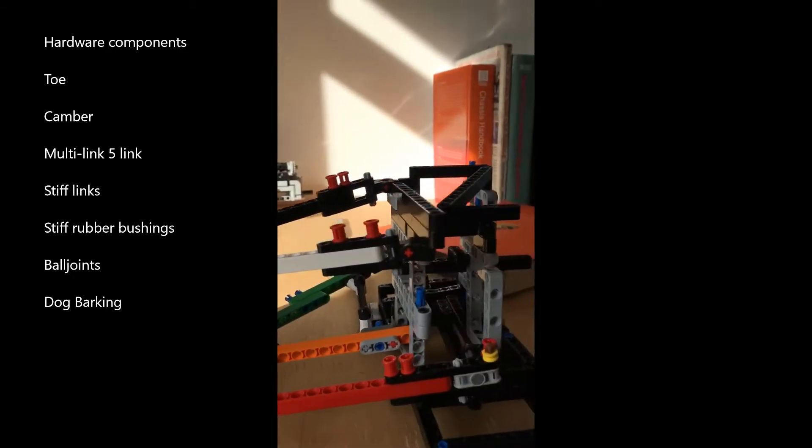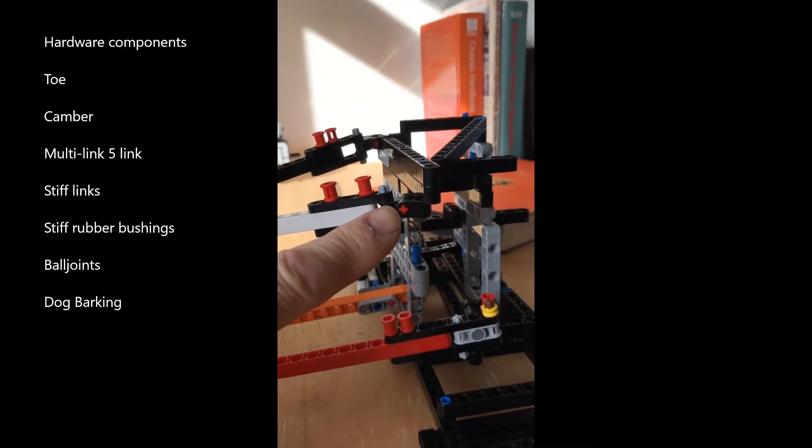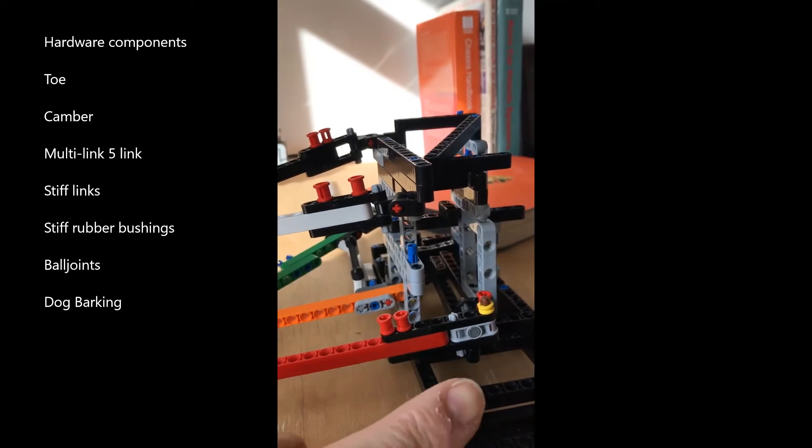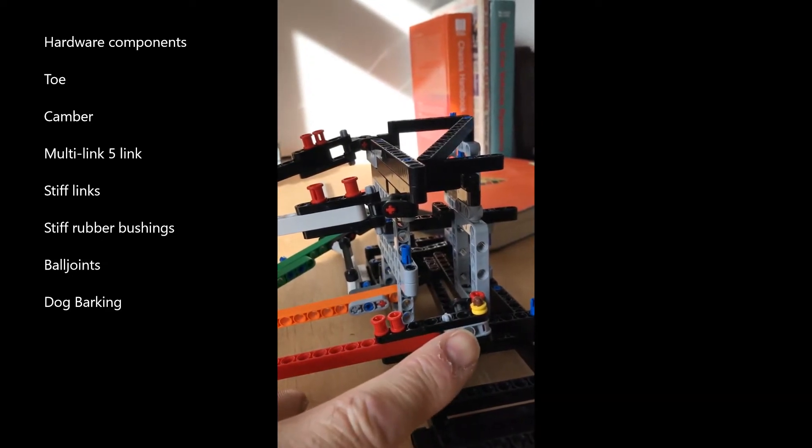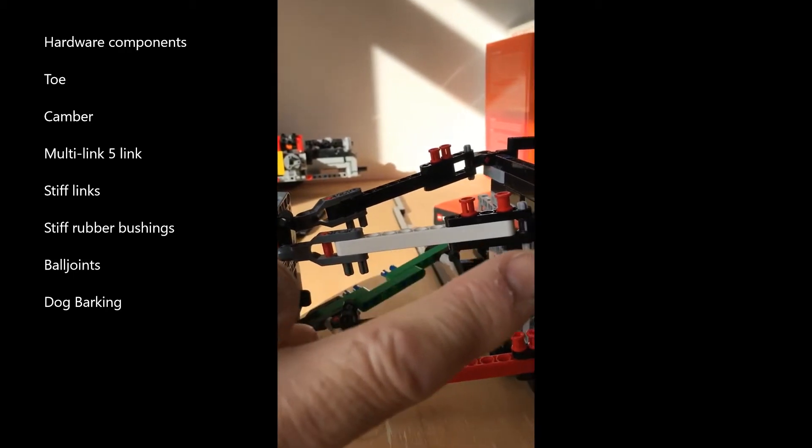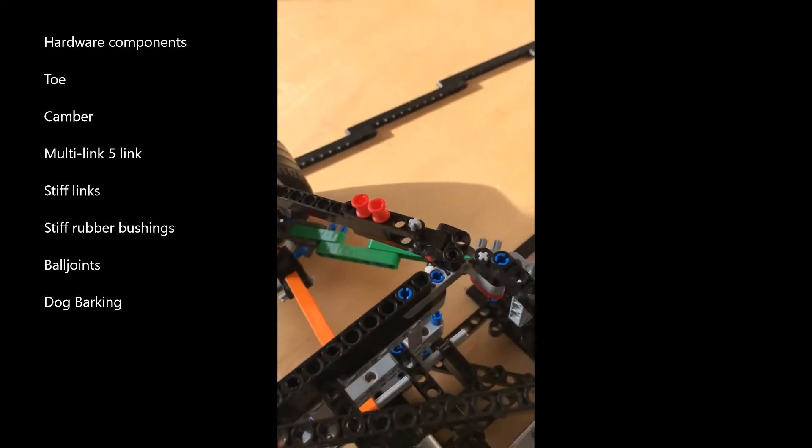At the inboard of these links there are bushes. These allow constrained amount of movement and are very stiff on the car. So we have bushes on the inner pivot location of this link, and the upper link here, here, and here.